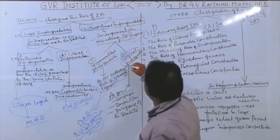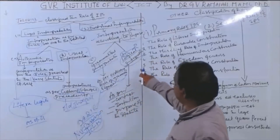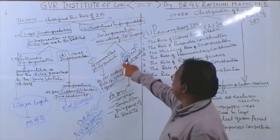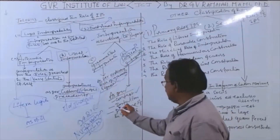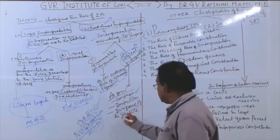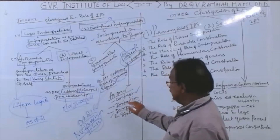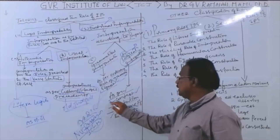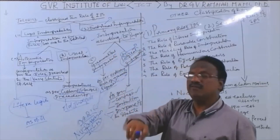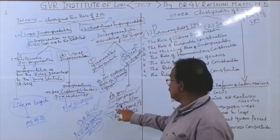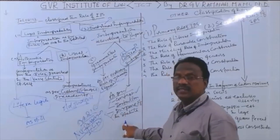The second form of doctrinal interpretation is logical interpretation. Here, the meaning of a word is gathered according to the context in which it was used, the intention of the framers, and the purpose of the statute. Judges are advised: in case of ambiguity, find the meaning of a word according to its context, the intention of the framers, and the purpose of the statute.